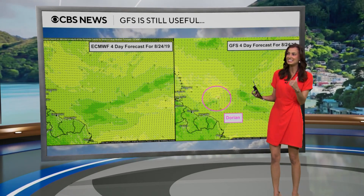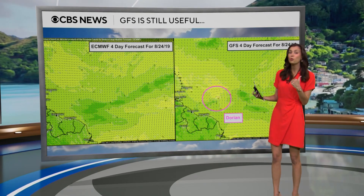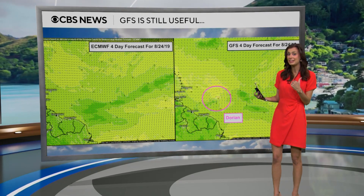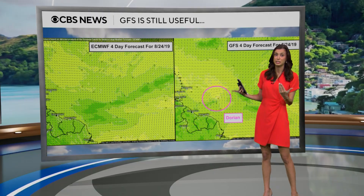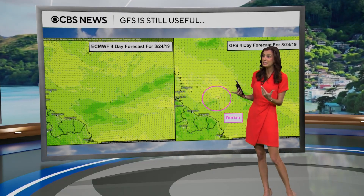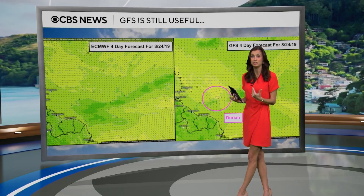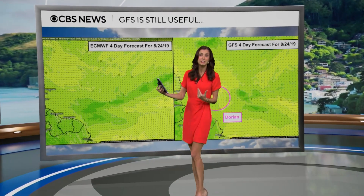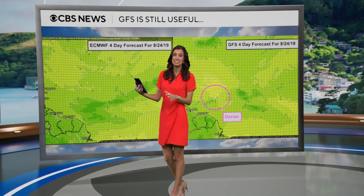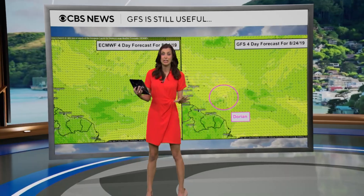This was back in 2019, where four days in advance, the GFS — the American model — picked up on signs of a hurricane forming, while the European model, as you can see, had literally nothing.